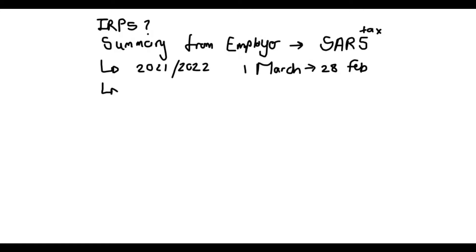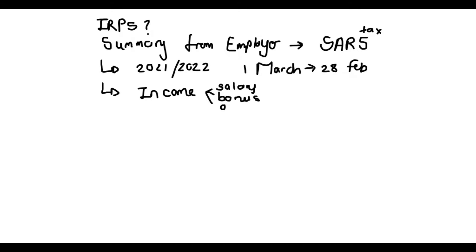What else you will see on this IRP-5 form is all your income. When I say income, I mean your salary — your monthly salary and the total for that year — as well as extra income like bonuses or overtime. Some people work overtime.